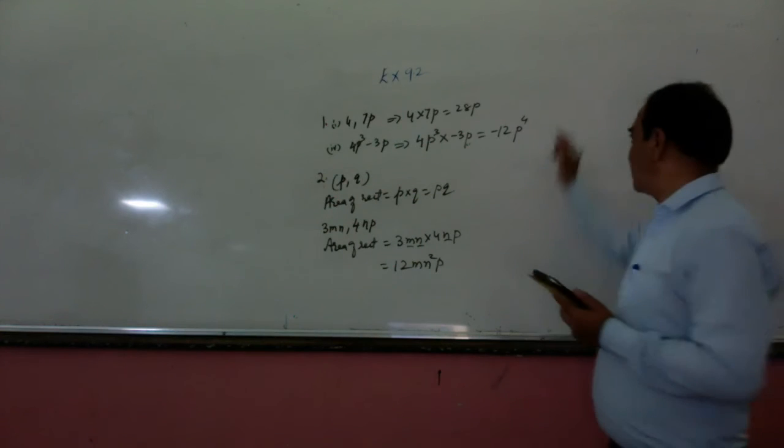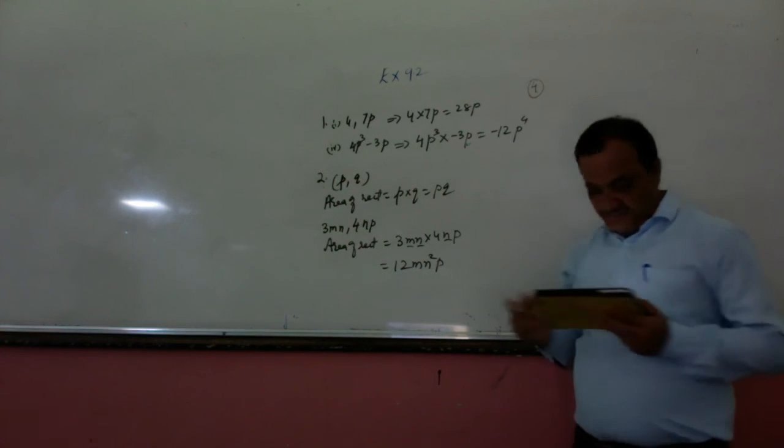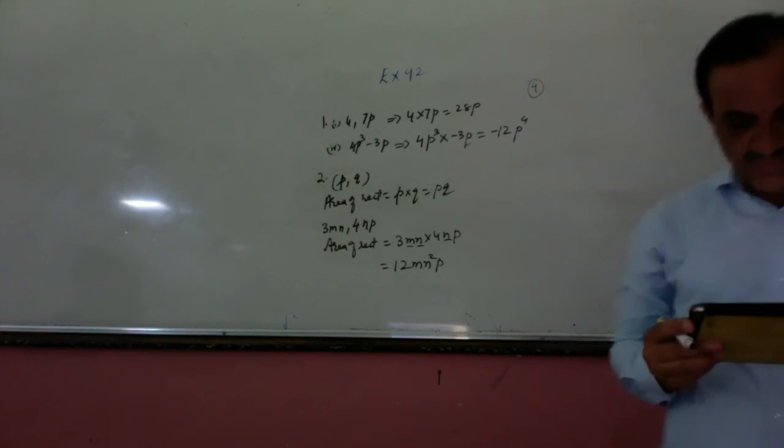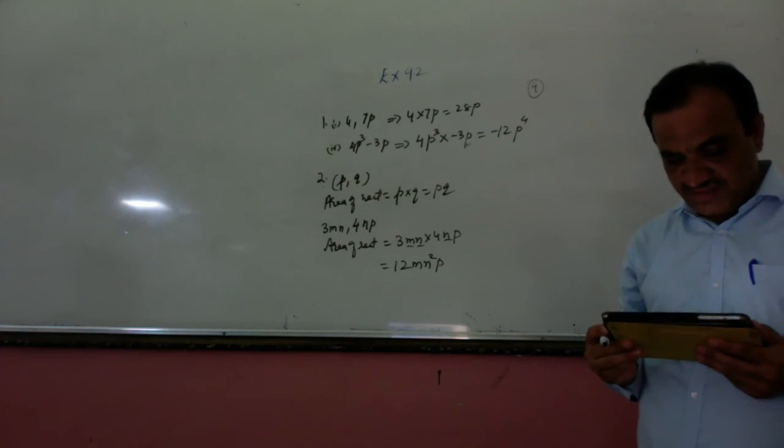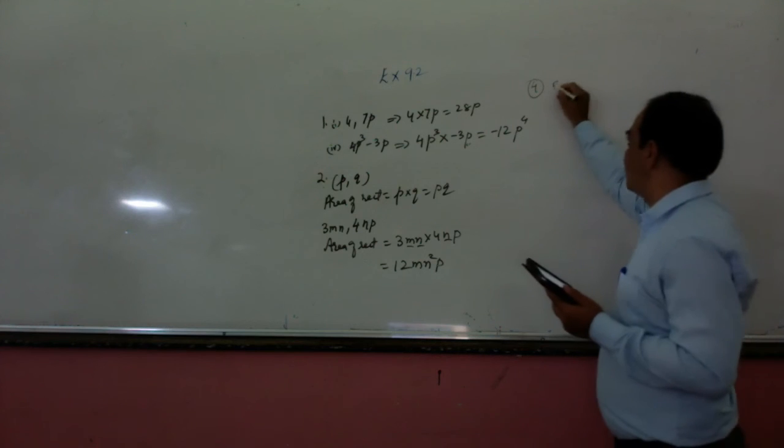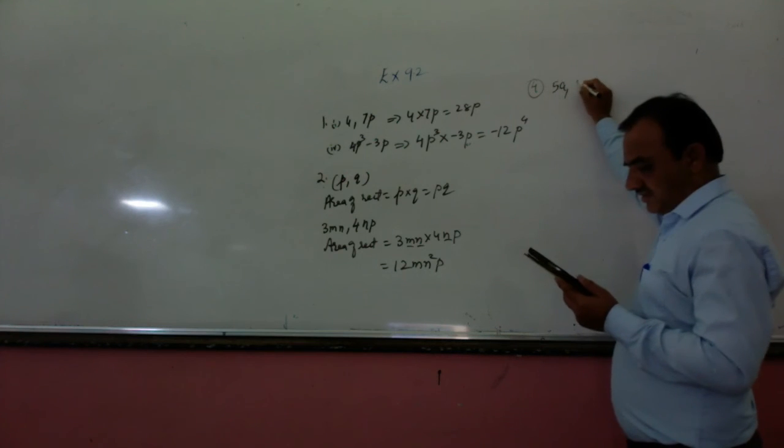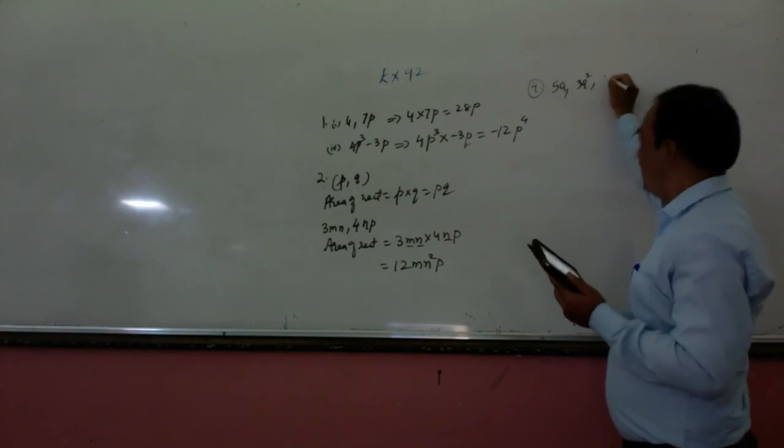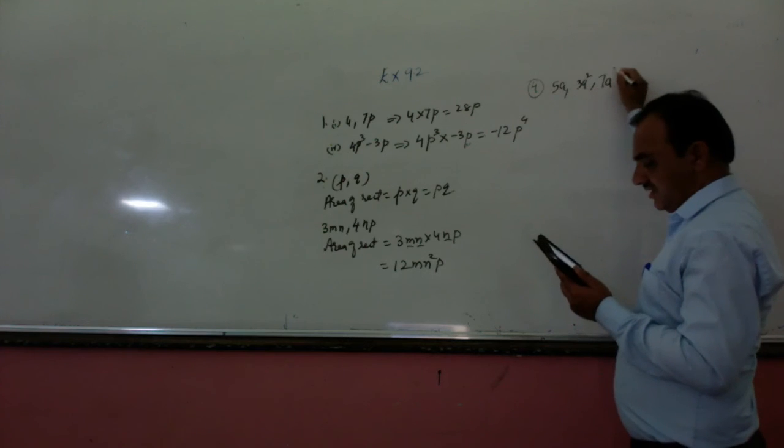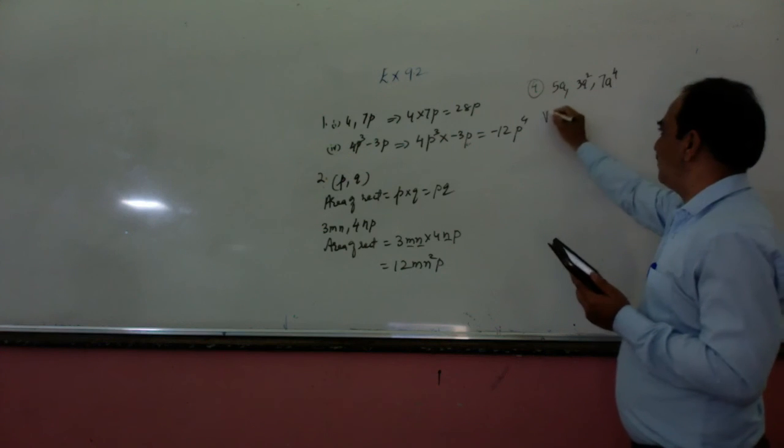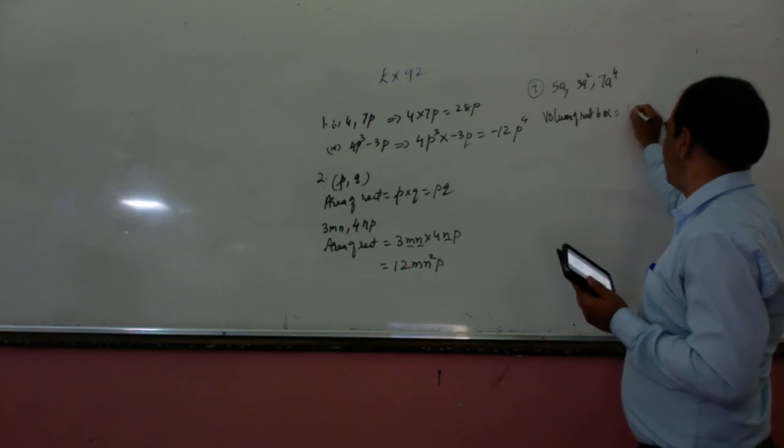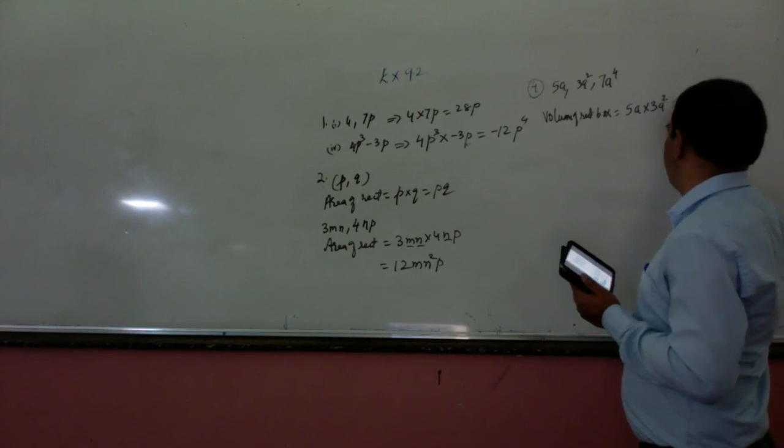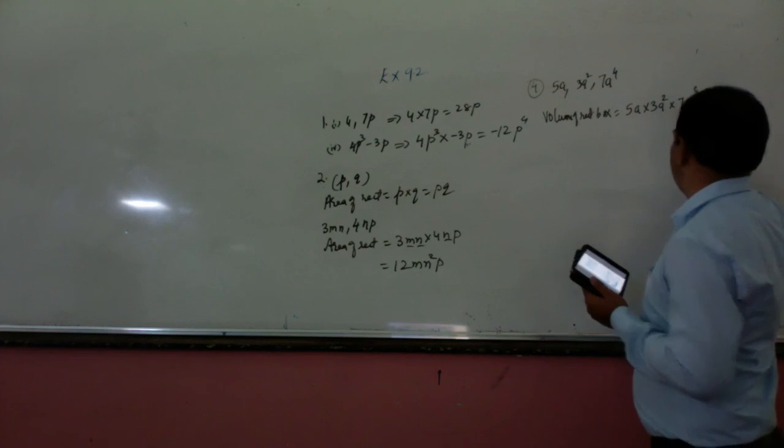Now come to question number 4. It is given: Obtain the volumes of the following rectangular boxes whose length, breadth and height are given. Length is given 5a, breadth is given 3a square, and height is given 7a⁴. So you can find the volume of rectangular boxes: 5a into 3a square into 7a⁴.